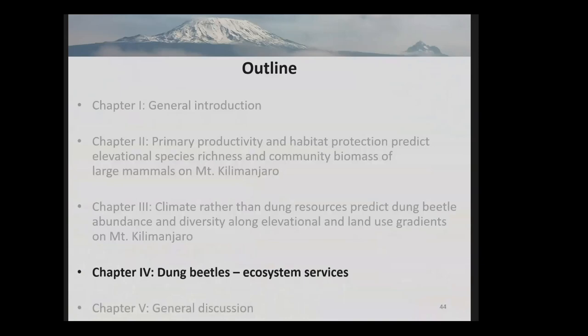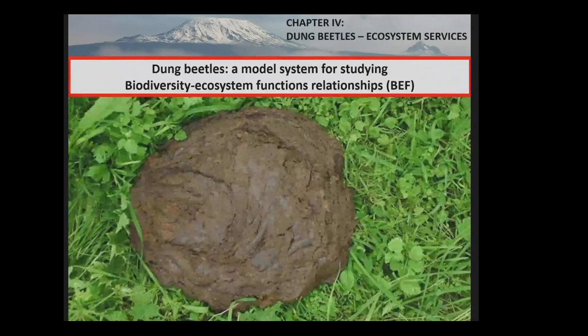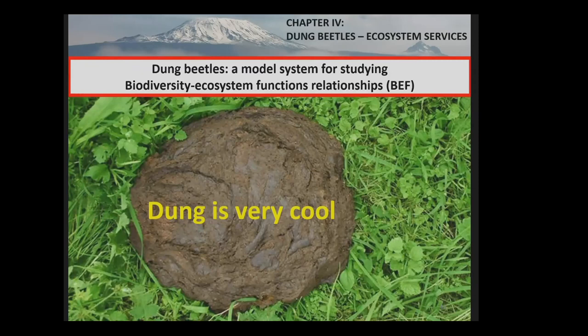Now the last chapter deals with dung beetle ecosystem services, titled: A Correlative and Experimental Approach to Dung Decomposition by Dung Beetles. Dung beetles are model systems for biodiversity-ecosystem function relationships because of the resource they use — dung. Dung is a model system for BAF relationships because dung occurs in ephemeral resource patches that are spatially delimited, and can be quantitatively manipulated, replicated, measured, and sampled very easily.